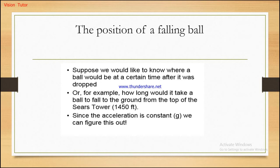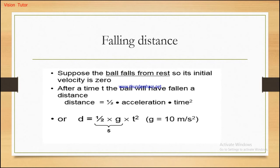We'd also like to know the position of a falling ball. Suppose we want to know where a ball would be at a certain time after it was dropped, or how long it would take to fall from the top of a structure — say 1,450 feet. Since acceleration is constant (g), we can figure this out. The ball falls from rest with initial velocity zero, so distance equals ½ × g × t².